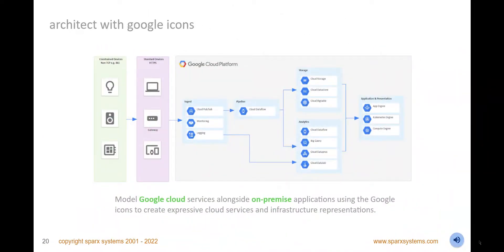Create expressive diagrams of your organization's Google architectures and model a full range of resources, including Compute Engine, Cloud SQL, Speech-to-Text, Kubernetes Engine, Data Catalog, and more. These expressive diagrams use all the standard Google icons available from the toolbox and browser, conveniently grouped into categories such as Compute, Data Analytics, and AI and Machine Learning. Model these Google Cloud infrastructures alongside on-premise and other vendor cloud architectures, allowing model stakeholders to get a cross-platform view of the architecture landscape.